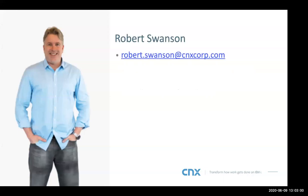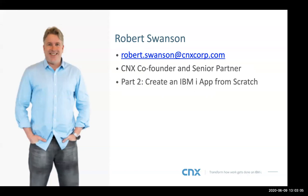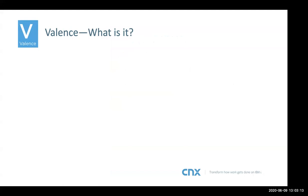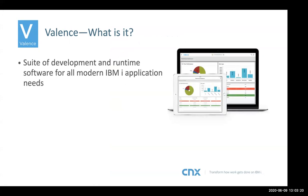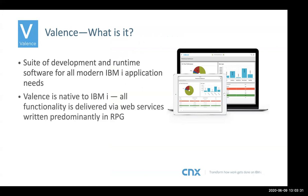This is Rob, and this is his email address. He is co-founder and senior partner of CNX, and he will take care of actually doing the demonstration. Once I'm done I'll hand it off to Rob. So let's start with the basic question: What is Valence? Sometimes we refer to it as the Valence Modernization Suite. It is basically a suite of development and runtime software for all modern IBMI application needs — that's what it is, boiled down to one sentence. And it is native to the IBMI.